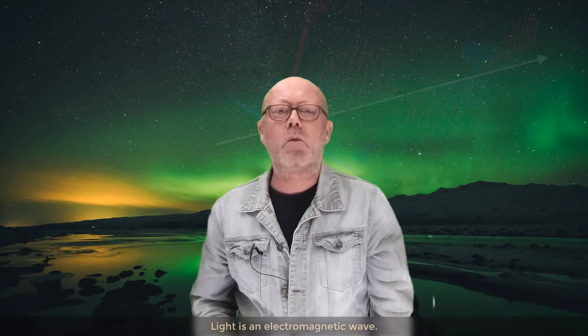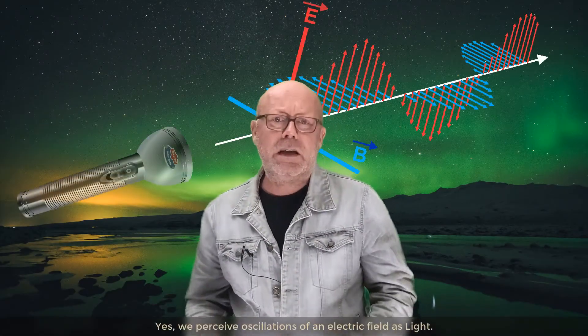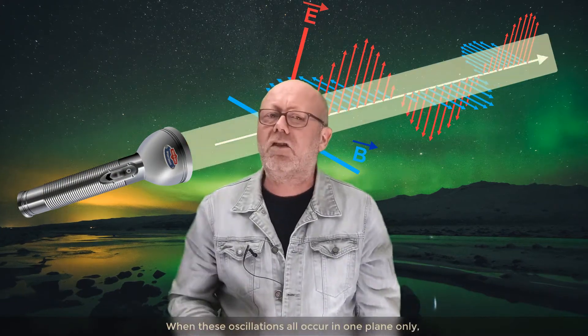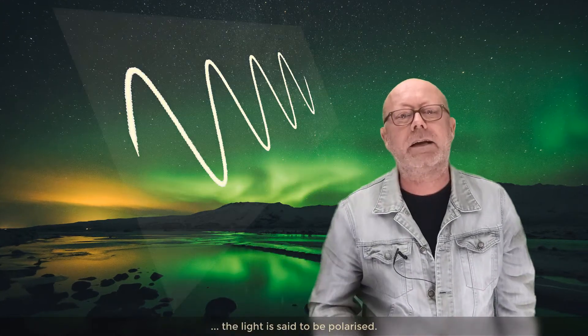Light is an electromagnetic wave. Yes, we perceive the oscillations of an electric field as light. When these oscillations all occur in one plane only, the light is said to be polarized.